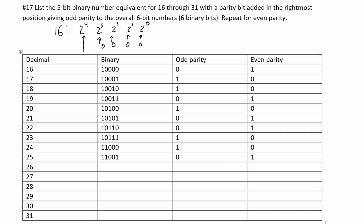26 is 24 plus 2. We'll put 24 (1 1 0 0 0) in here, and if we add 2 to this, we're just going to put a 1 in the 2 to the 1st position, giving 1 1 0 1 0. We have an odd number of ones, so we're going to have a 0 for odd parity and a 1 for our even parity.